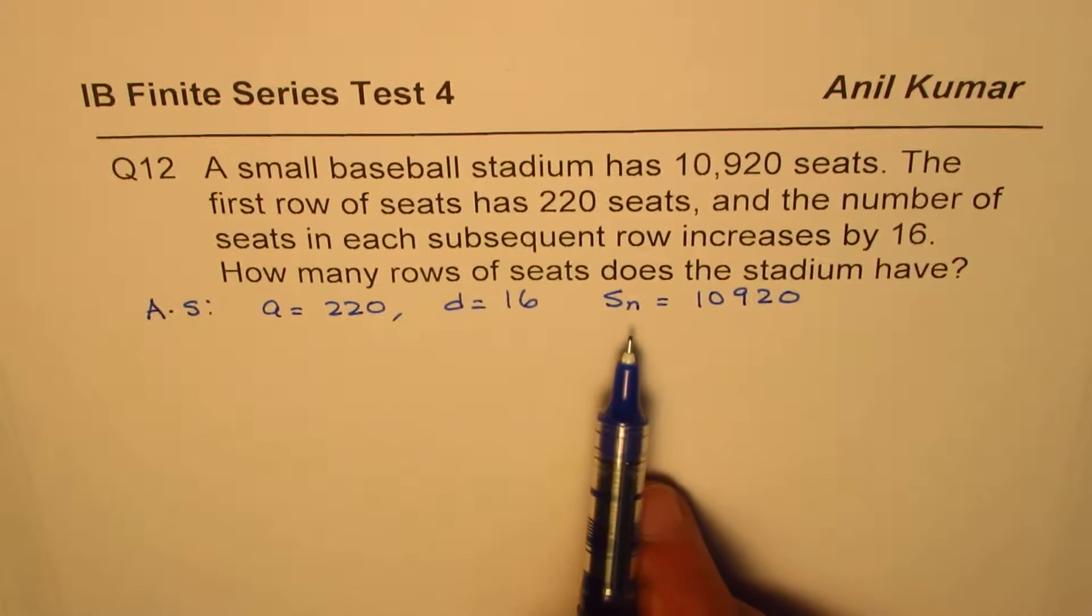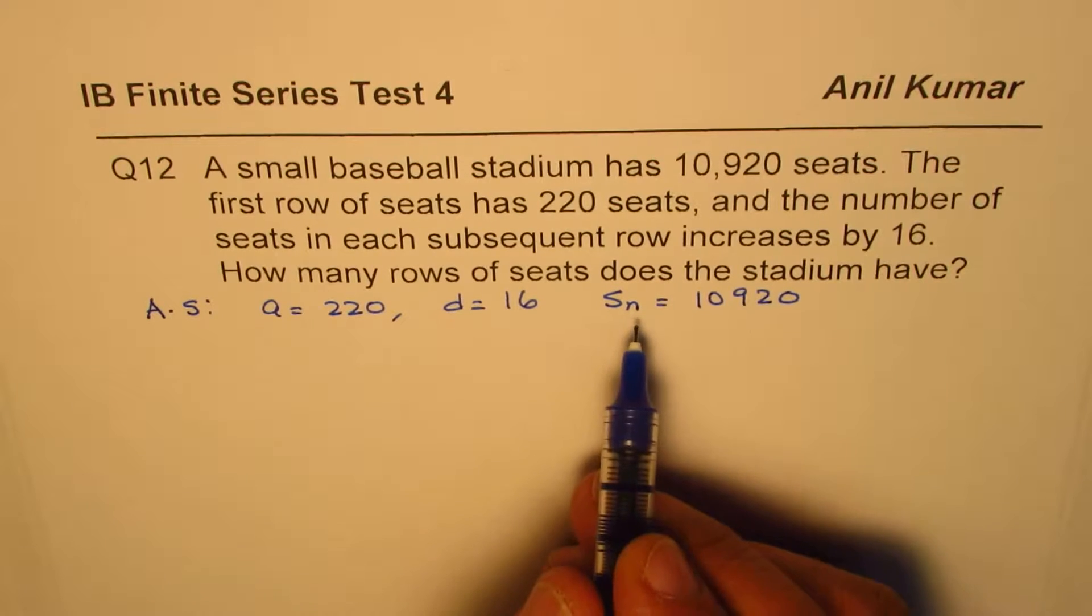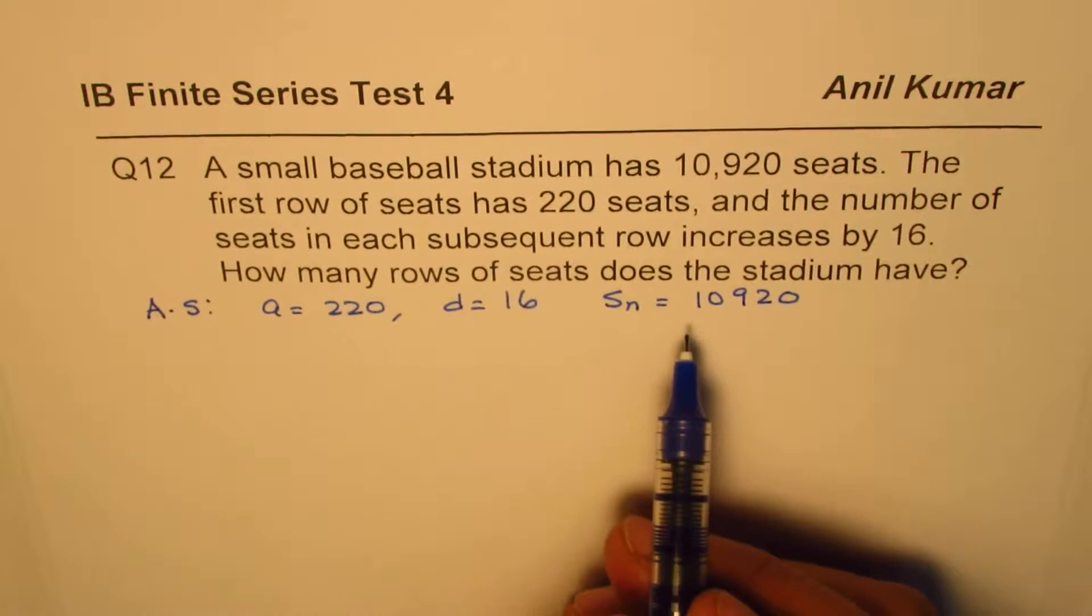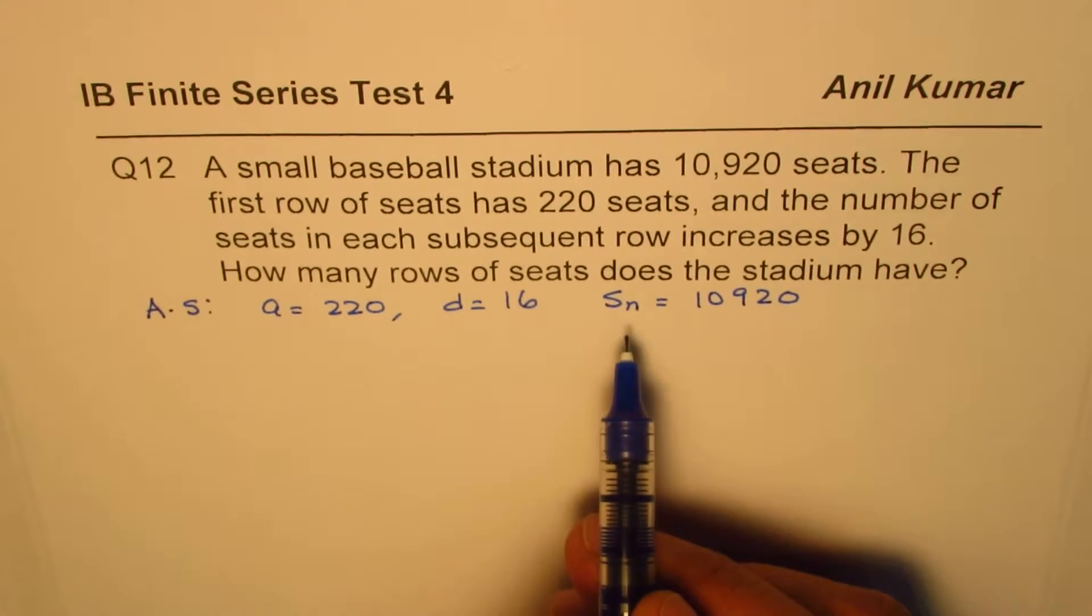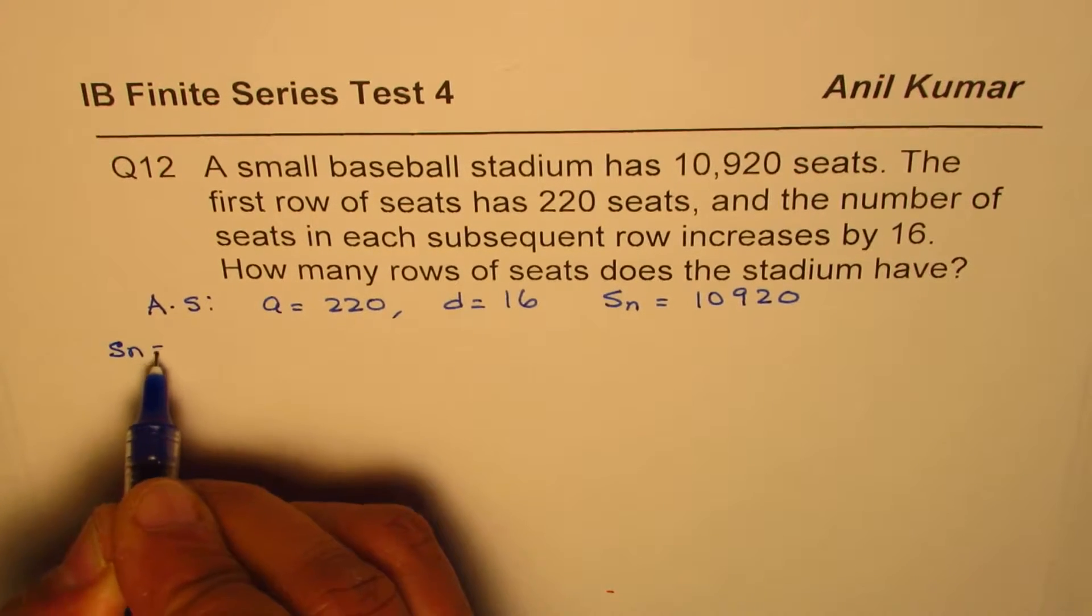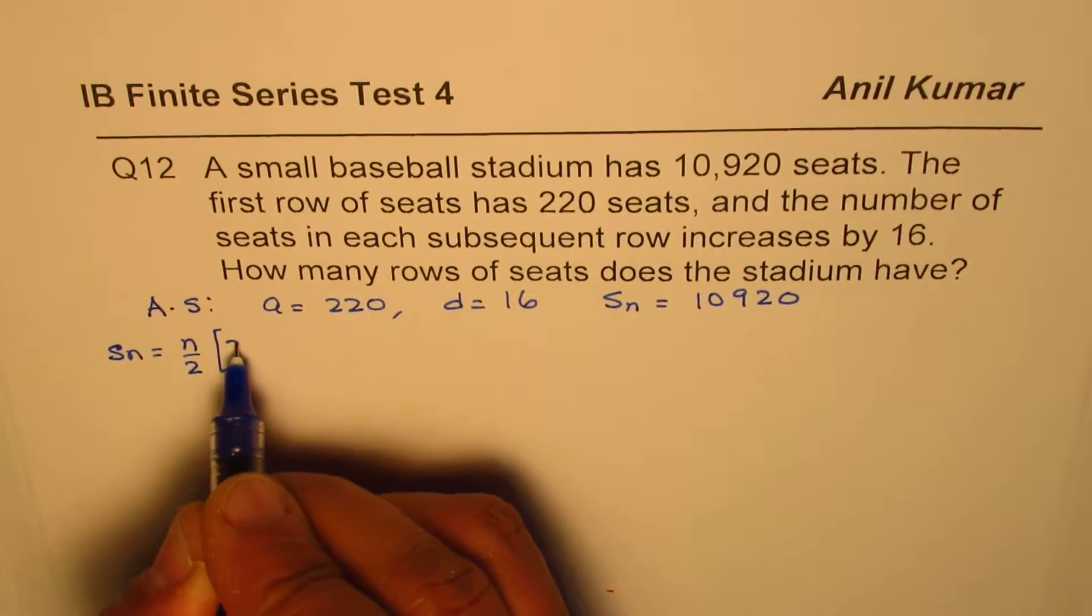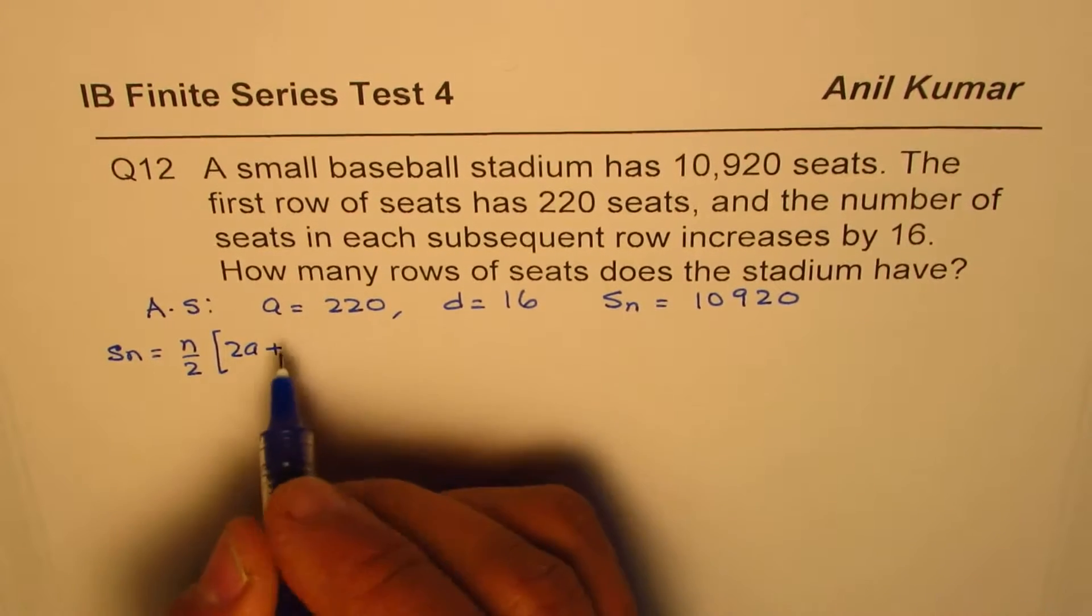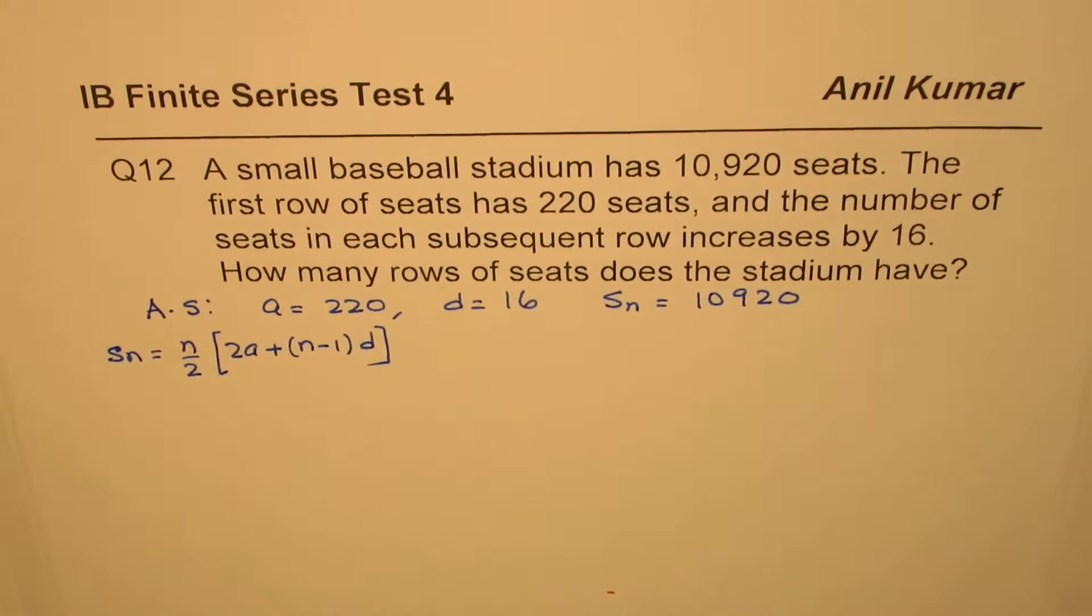Now to find the solution we just need the formula for the sum. There are two formulas which you have learned. One is when you know the last number and the first number. Since we don't know the last number we cannot use that one. So here the formula to be used will be that the sum is n divided by 2 times 2a plus n minus 1 times d.